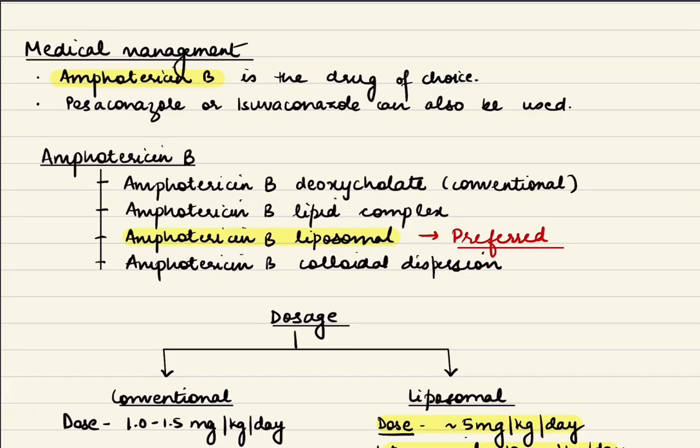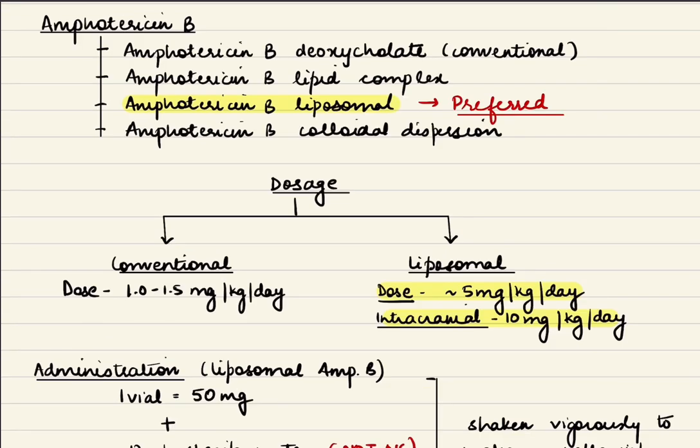Medical management is very important, and Amphotericin B is the drug of choice. However, we can also use posaconazole or isavuconazole. Amphotericin B comes in four forms: Amphotericin B deoxycholate (conventional), Amphotericin B lipid complex, Amphotericin B liposomal, and Amphotericin B colloidal dispersion. There is not much difference in efficacy, but we prefer liposomal Amphotericin B as it has the least side effect profile.